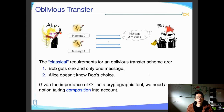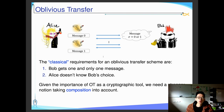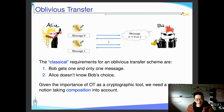First, we recall the setting of an oblivious transfer protocol. There are two parties, Alice and Bob, as the sender and receiver. Alice has two messages, and Bob would like to know one of them. After the execution, there are two requirements: the first is that Bob gets one and only one message, and the second is that Alice doesn't know Bob's choice.